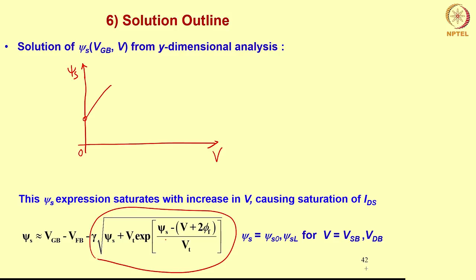Now let us appreciate why ψs will saturate. If the exponent becomes more and more negative, the exponential falls — you know that exponential of a negative variable goes to zero if the variable keeps increasing. So this entire exponential term is going to vanish. Once that happens, you are left with a simple quadratic equation for ψs. When you solve it, ψs will be a constant — a function of Vgb − Vfb and gamma, all of which are constants. So for large V, ψs reaches saturation. The saturation value is obtained by removing the exponential term and solving the remaining quadratic.